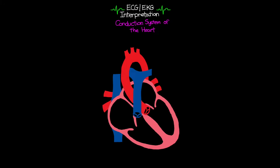We have a diagram of the heart here, and I'm going to use this to show you where the conduction system is and help you have a good understanding of what's going on. I'm going to label some parts so we're looking at this in the same way. The first thing I'm going to label is our right atrium, right ventricle, left atrium, and left ventricle — the four major chambers of the heart through which blood flows to various parts of the body.